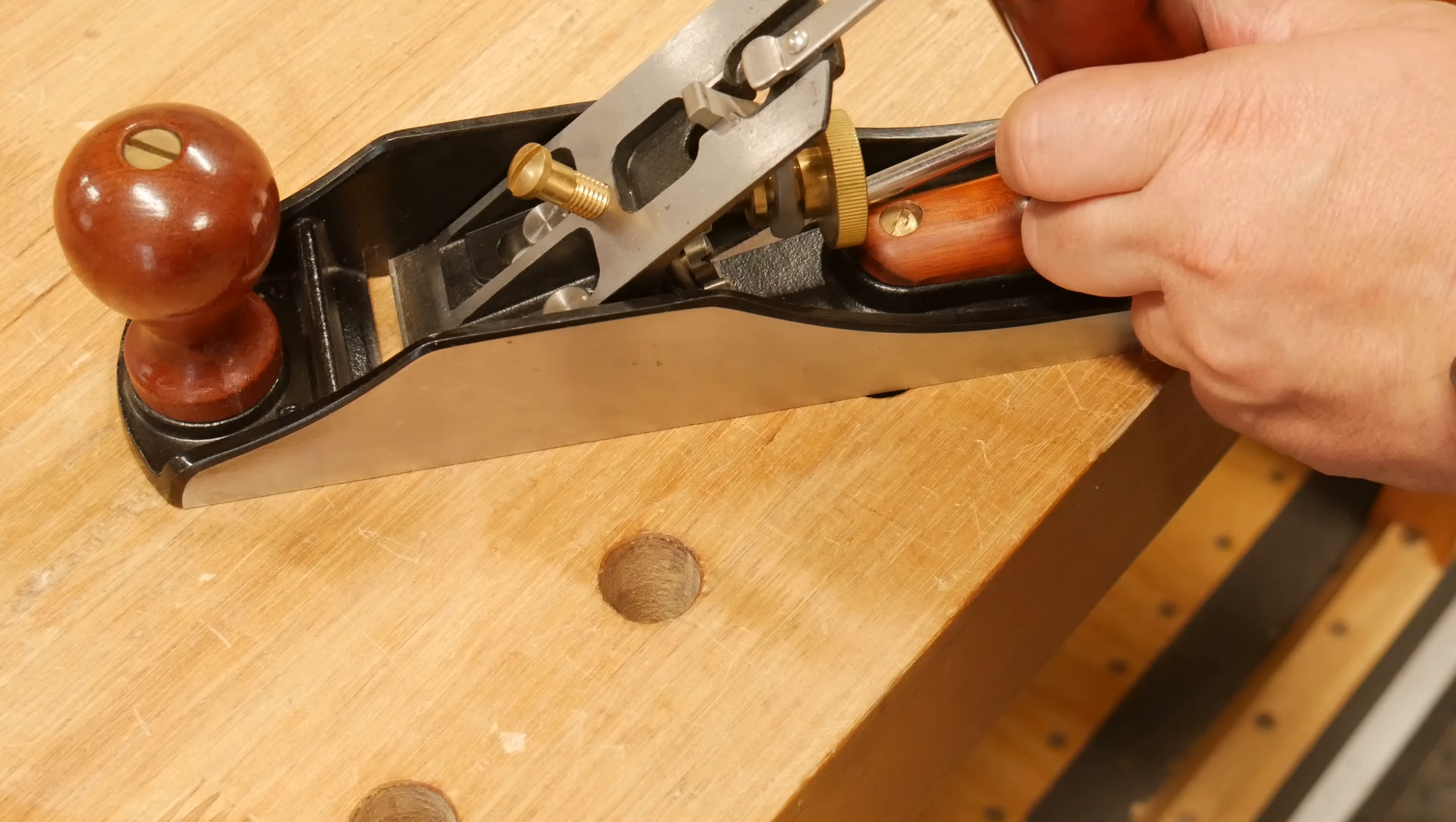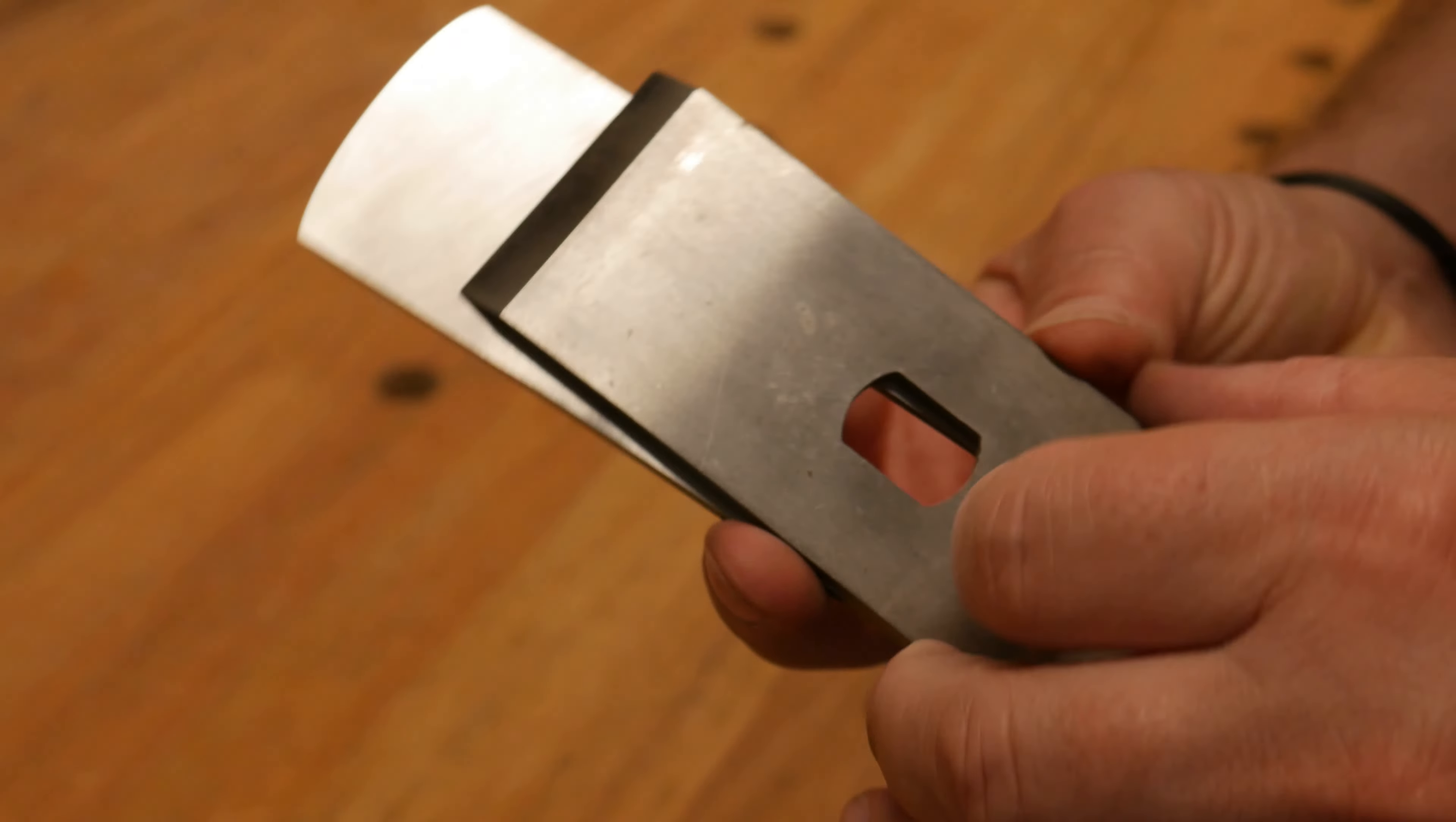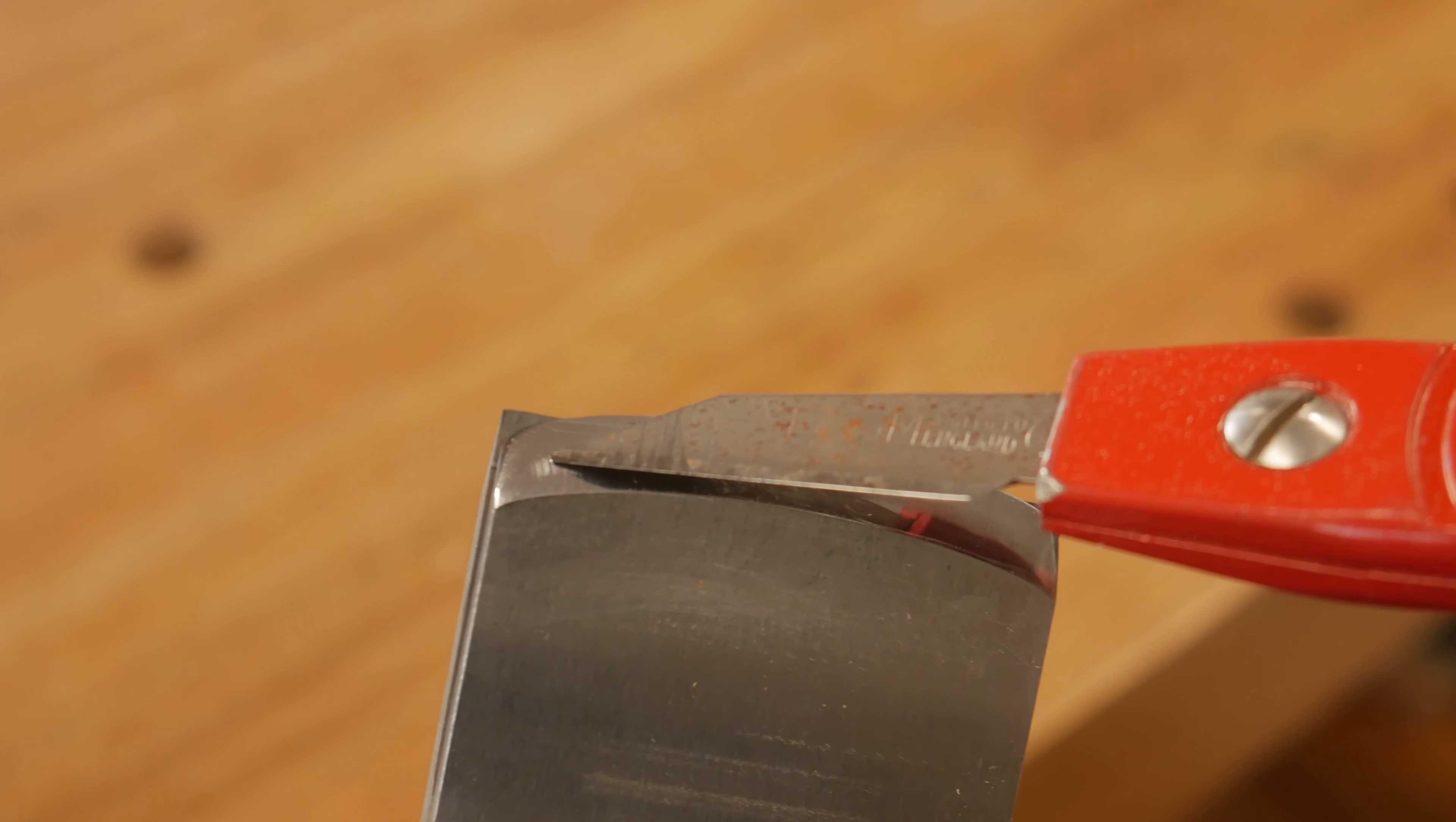Adjusting the frog as far back as possible allows for greater waste removal, which is what the scrub plane is all about. The chip breaker is put in place, but as you can see, the corners protrude the edges, so I tackle this with a standard file until it conforms to shape.